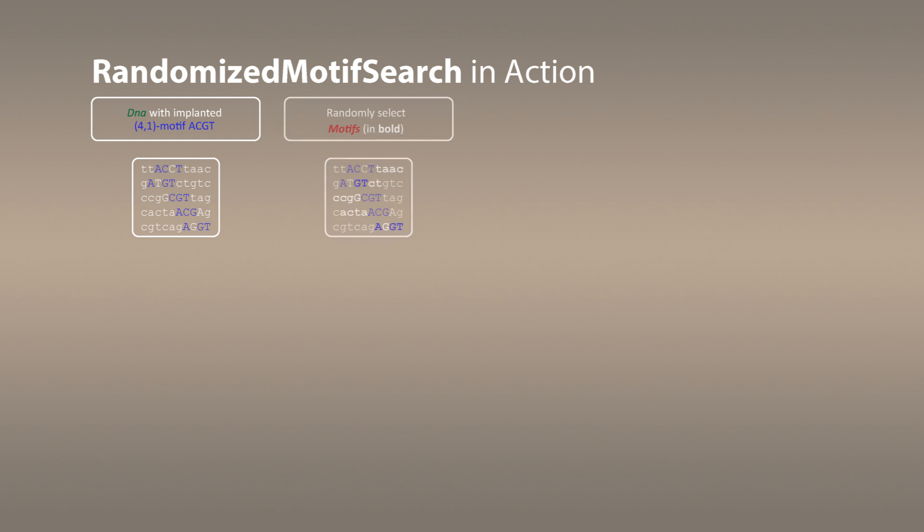So how will randomized motif search proceed? First it will randomly select motifs shown in bold here, and as you see, of course it missed most of the motifs. They are randomly selected. Afterwards it will form the motifs matrix shown here on this slide.